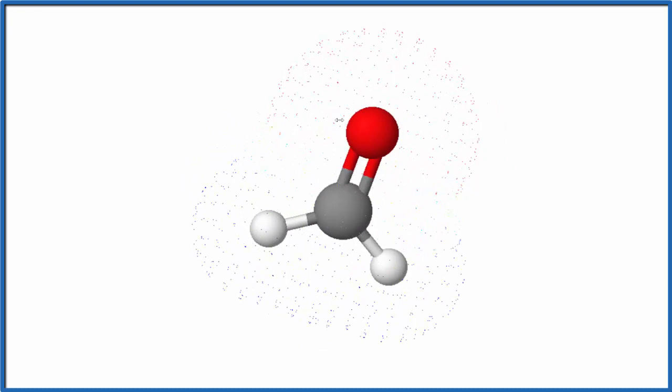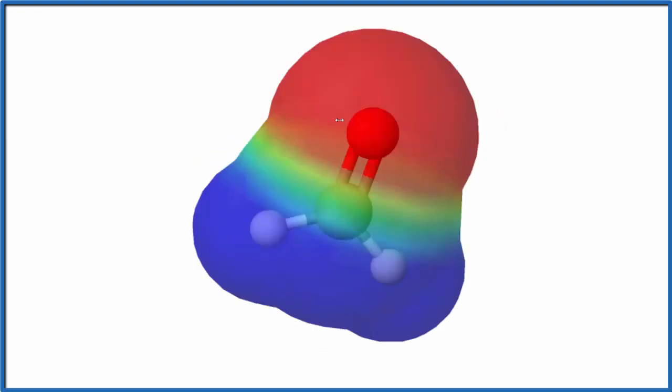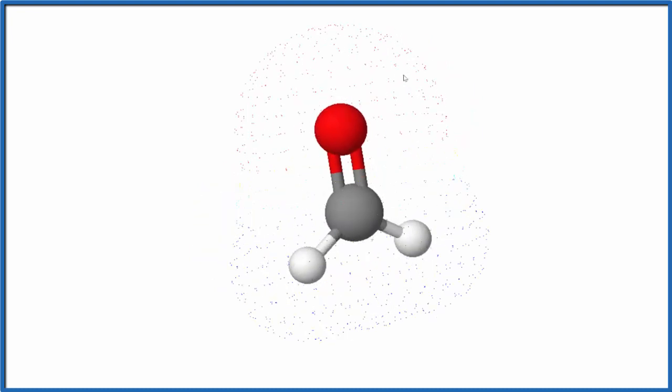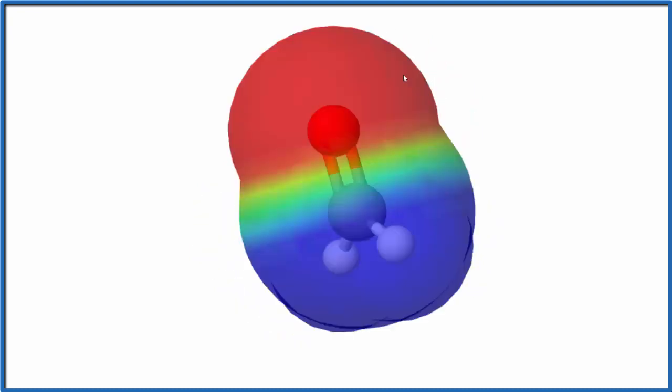So just like we expected, the red area will be around the oxygen, and then the hydrogens down here, they're more positive, a little green in the middle. So H2CO is a polar molecule. It has poles. It has a net dipole.